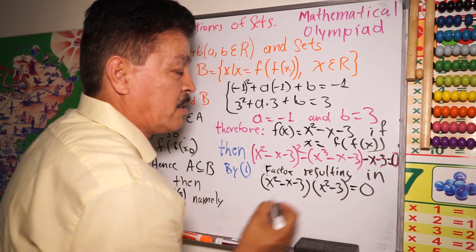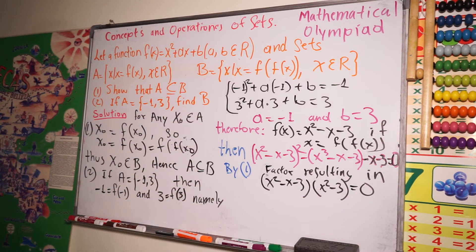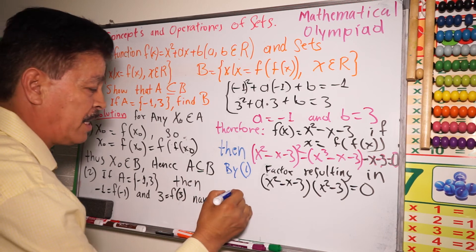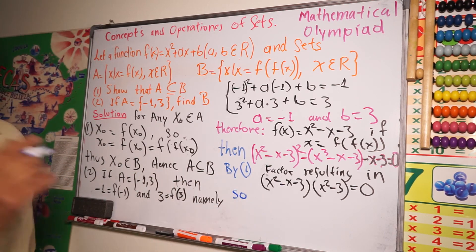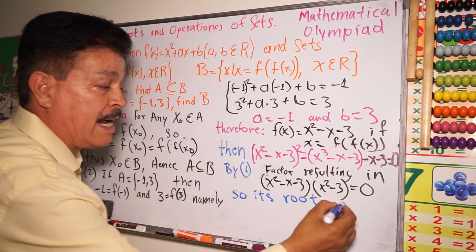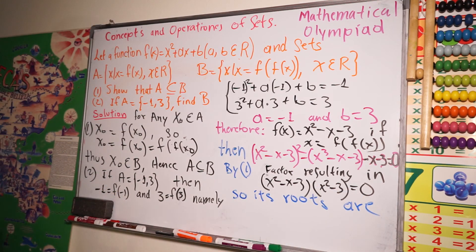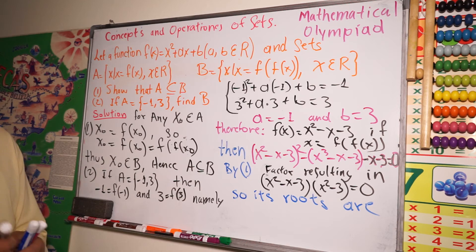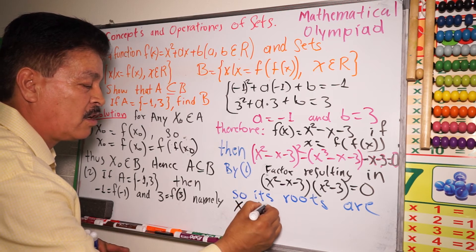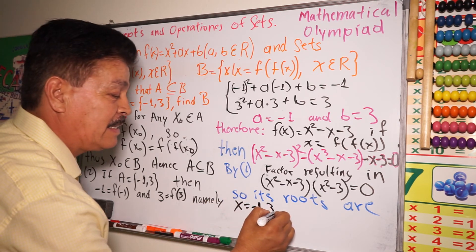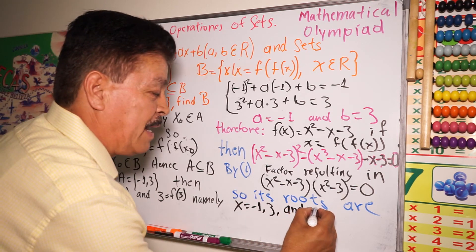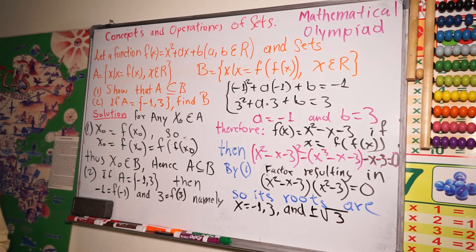The roots of this equation are: x equals negative 1, x equals 3, and also x equals positive and negative square root of 3. So we now have the answer.